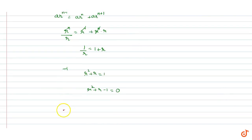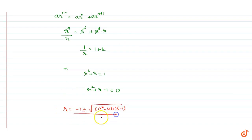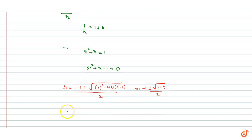Using the quadratic formula, r = (−1 ± √(1² − 4·1·(−1))) / 2, which simplifies to r = (−1 ± √(1 + 4)) / 2 = (−1 ± √5) / 2.